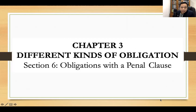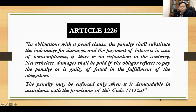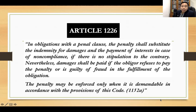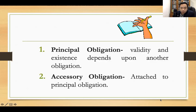Now we go to the last kind of obligation: section six, obligations with a penal clause. Article 1226: in obligations with a penal clause, the penalty shall substitute the indemnity for damages and the payment of interests in case of non-compliance, if there is no stipulation to the contrary. Nevertheless, damages shall be paid if the obligor refuses to pay the penalty or is guilty of fraud in the fulfillment of the obligation. The penalty may be enforced only when it is demandable in accordance with the provisions of this code.